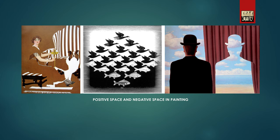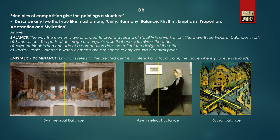There is an alternate question in which you have to write any two principles of visual art from the following: unity, harmony, balance, rhythm, emphasis, proportion, abstraction and stylization. Among these, you have to write any two principles.